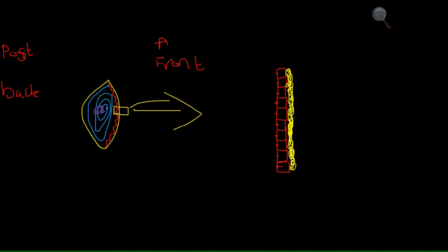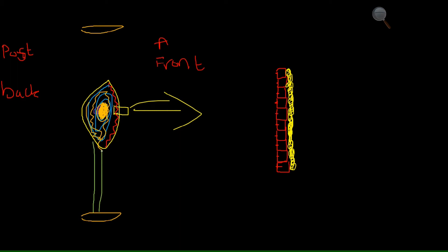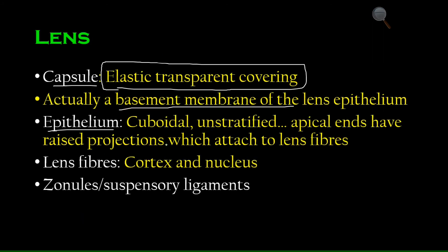The lens fibers have two zones: a central zone called the nucleus and a peripheral zone called the cortex. The ciliary body, as discussed in the previous diagram, sends out suspensory ligaments that attach to the capsule from above and below. That is the basic structure of the lens.